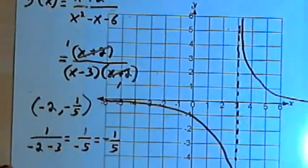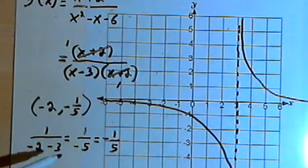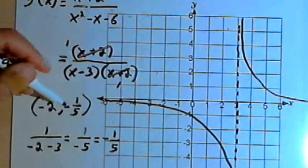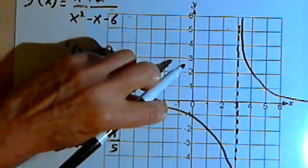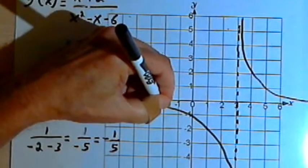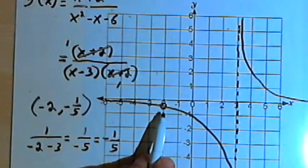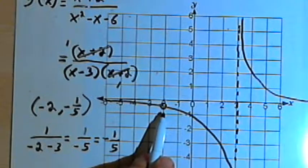Okay, now before I finish, I have to show the location where the hole is. The hole was at negative 2, comma, negative one-fifth. So at that point on the graph, what I want to do is draw a small circle to show that the graph does not continue at that point. There's a hole at that point.